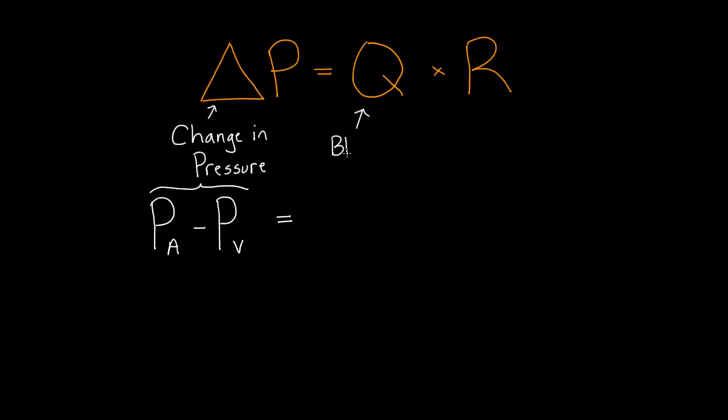This first one is blood flow. Blood flow we measure in volume over time, or volume per minute. And the other one is resistance.